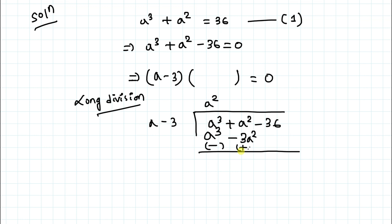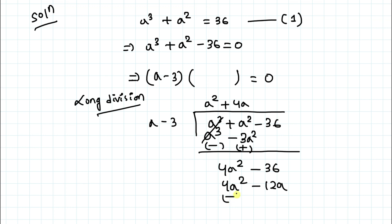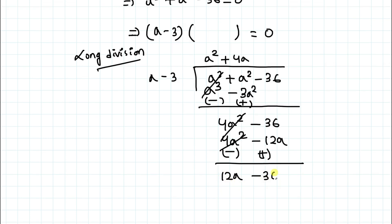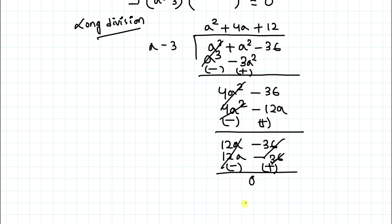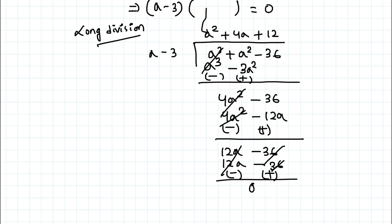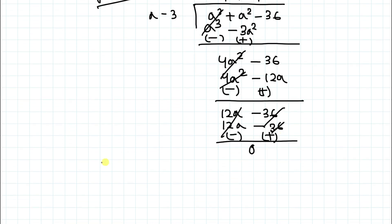Subtracting, the a³ terms cancel and we get 4a² − 36. To cancel 4a², we put +4a in the quotient: 4a times a gives 4a² and 4a times −3 gives −12a. Subtracting gives 12a − 36. We then put +12 in the quotient: 12 times a gives 12a and 12 times −3 gives −36. Subtracting gives remainder 0. The other factor is a² + 4a + 12.